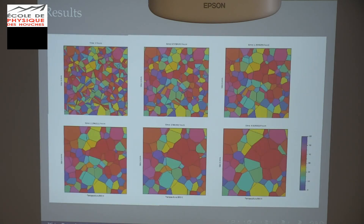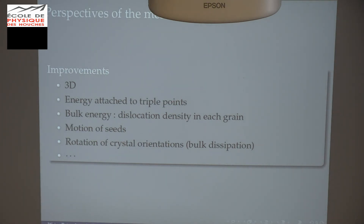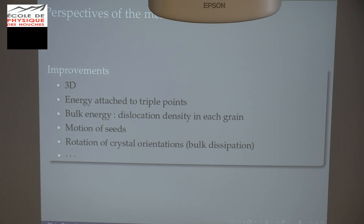I'm now focused on improvements, because I simplified the model a lot by removing everything except the core of the system — the curvature-driven growth. The first improvement is going to 3D. I initially avoided 3D because I didn't want too many state variables at the macroscopic scale, but now that it works in 2D, it's not so difficult to go to 3D for the mesoscopic model because Voronoi tessellation works very well in 3D, and updating weights in 3D is exactly the same as in 2D.